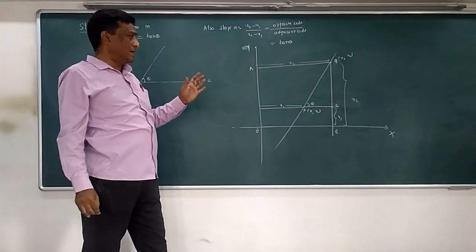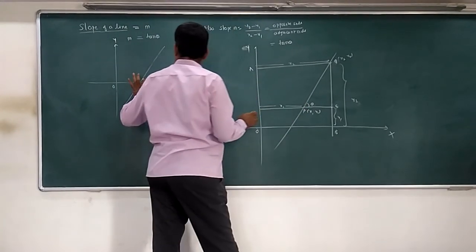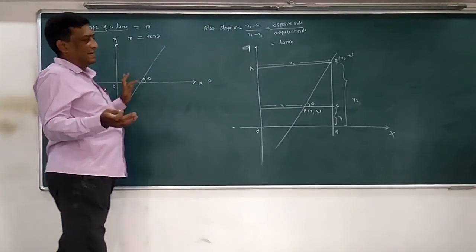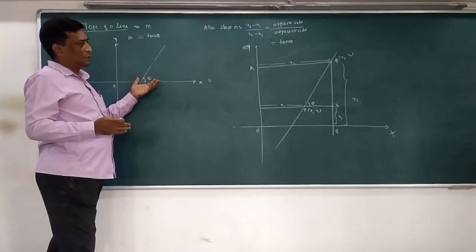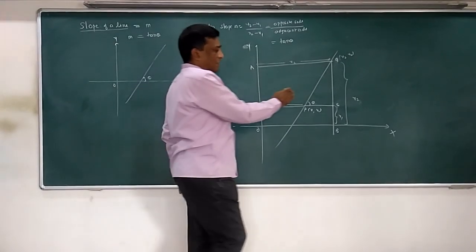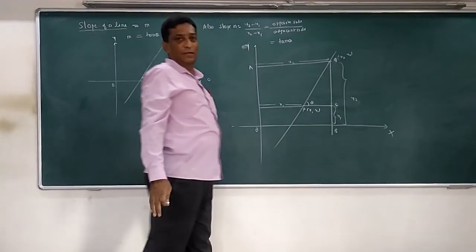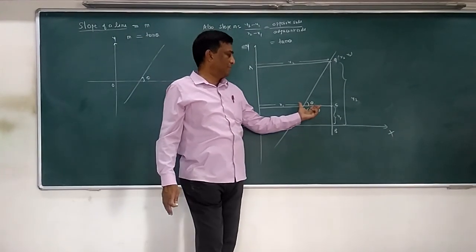Now, how are they different? See here, they give you inclination - how much the line is inclined to the x-axis. That you find slope by tan theta. Here they don't give you inclination, they give you coordinates of P and Q. In this figure, if you see properly, P is given as x1, y1.